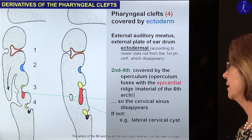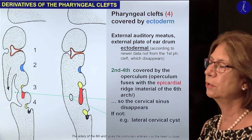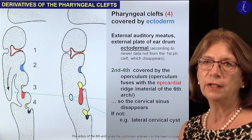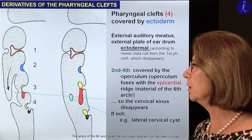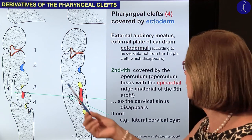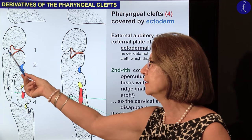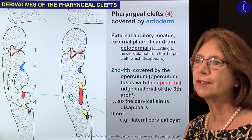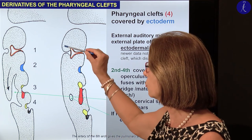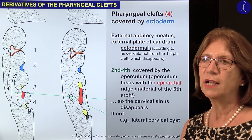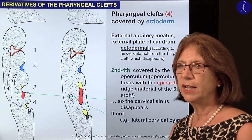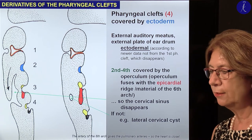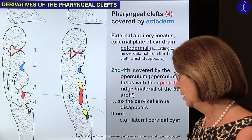What develops from the pharyngeal clefts? Originally we have four pharyngeal clefts, all covered by ectoderm. Until the last edition of the Langman book, we stated that from the first pharyngeal cleft the external auditory meatus and the external surface of the eardrum would develop. But newer data show that actually the first pharyngeal cleft disappears, and a secondary invagination from the surface gives the external auditory meatus plus the external surface of the eardrum. There is no difference in the origin — the external auditory meatus and external surface of the eardrum still come from the ectoderm, just not directly from the first pharyngeal cleft.